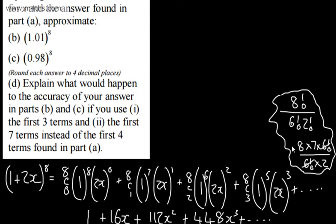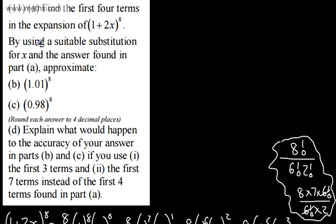Entirely up to you. It says now, by using a suitable substitution for x and the answer found in part A, approximate (b) 1.01^8 and (c) 0.98^8. We'll round each answer to 4 decimal places.